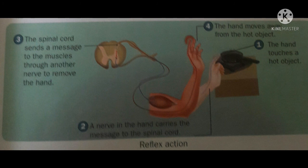To remove the hand. And in the fourth step, the hand moves away from the hot object. In this way, reflex action is done, and the path taken by the nerves to perform reflex action is called the reflex arc.